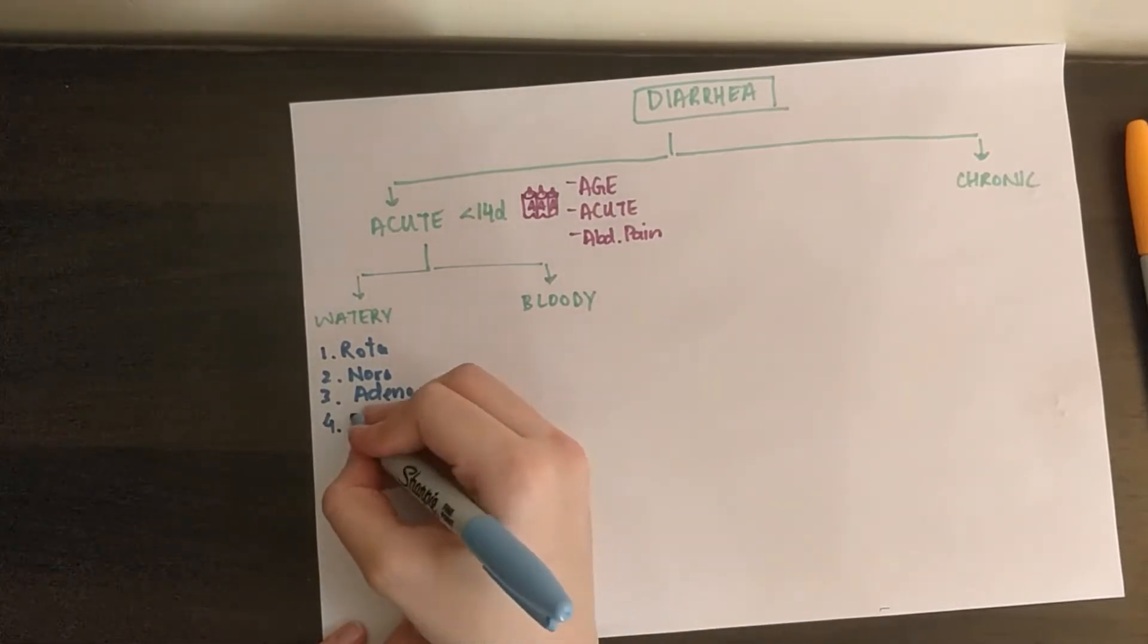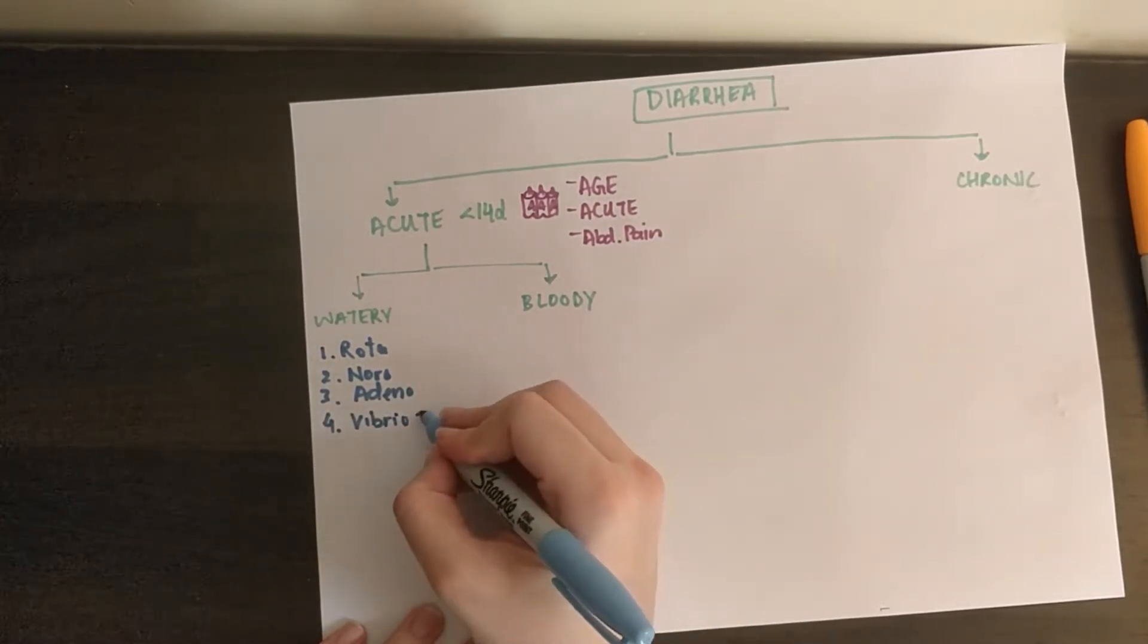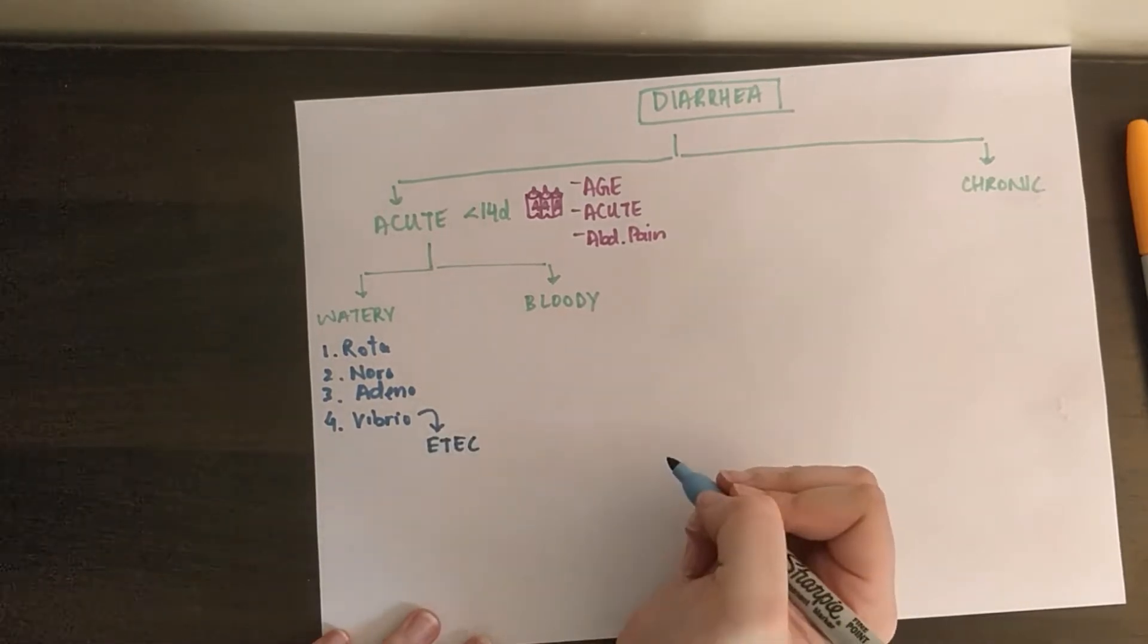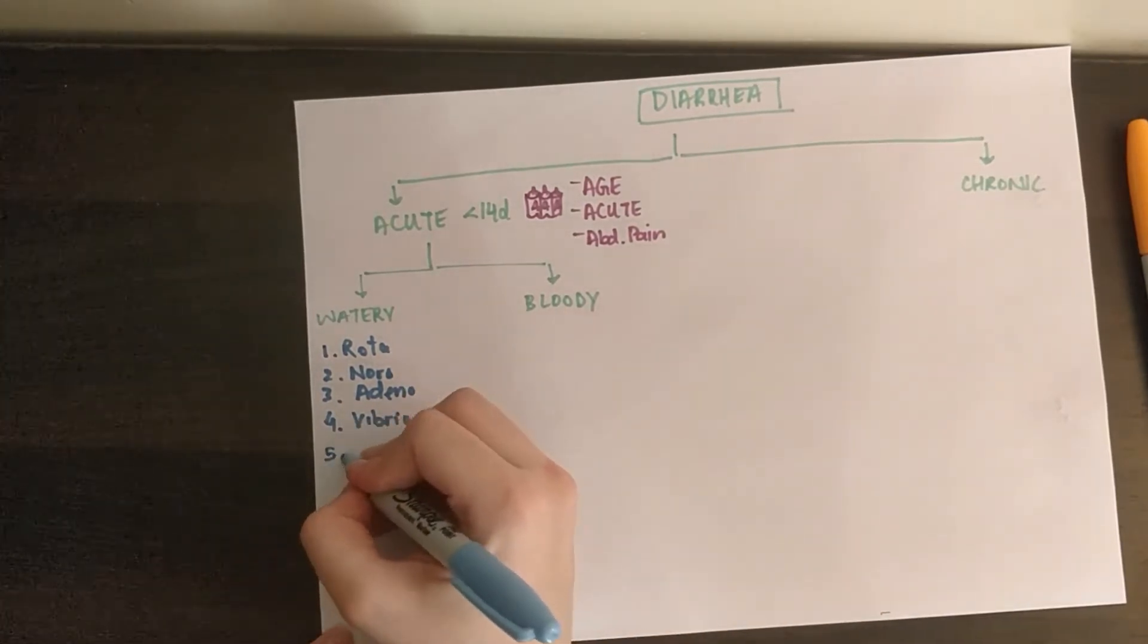Now comes Vibrio cholera. Keyword, rice water stool. Vibrio has a little brother, not really though, has enterotoxigenic E. coli, which has a cholera-like toxin that causes traveler's diarrhea.